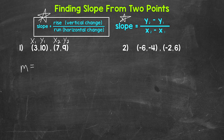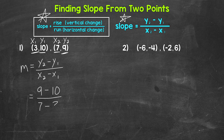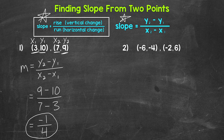So slope equals y2 minus y1 over x2 minus x1. Now we plug in. y2 is 9, minus y1 which is 10, over x2 which is 7, minus x1 which is 3. And now we subtract. 9 minus 10 gives us negative 1, and 7 minus 3 gives us 4. We end up with negative 1 over 4, negative one-fourth. And this is our slope.